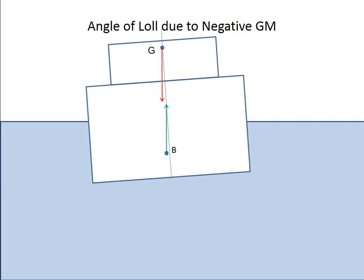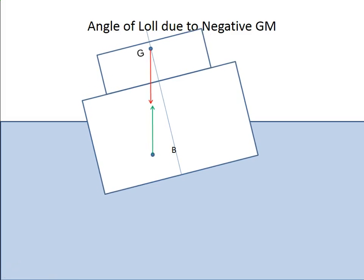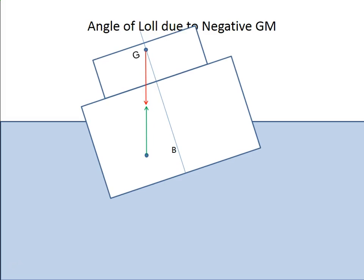And now we'll see that as it does it, just as it does that, there is that GZ again, which is capsizing, upsetting. And the vessel is going to continue to incline to the other side until B gets back below G again.